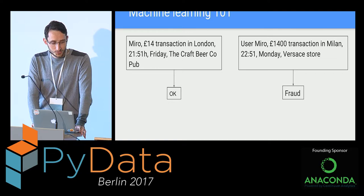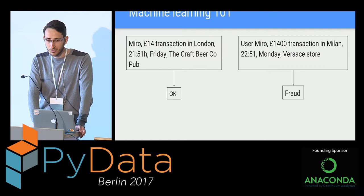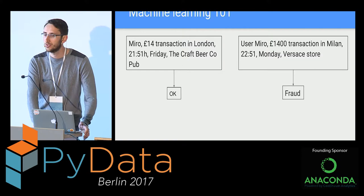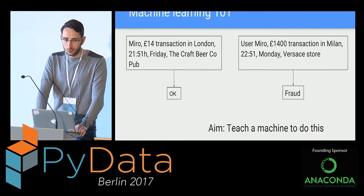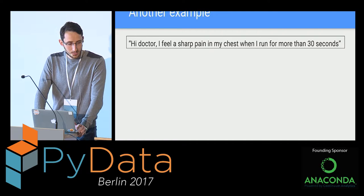At the same time, if you get a 1400-pound transaction in Milan, in the Versace store, that's probably not me. You definitely want to be able to automate the process of telling between a fraudulent transaction and one that's all right, because if you're operating at scale, you're not able to do it manually.